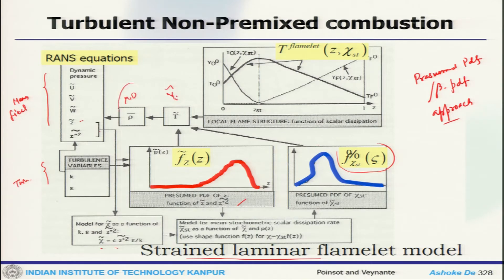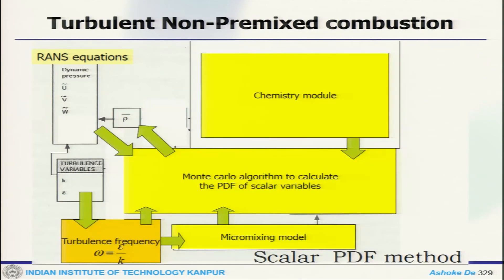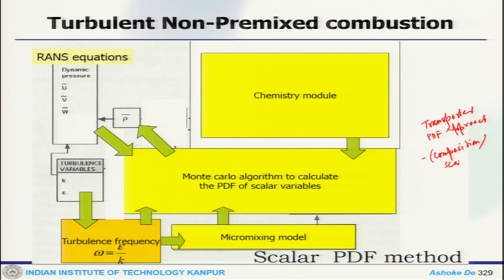All transport properties are sent back to the mean flow field equation to close the loop. This approach is computationally less demanding and can be applied to a large scale of problems. The scalar PDF or transported PDF approach — also called compositions PDF — involves solving the transport equation for the probability density function, which is computationally expensive, so we adopt a hybrid method.